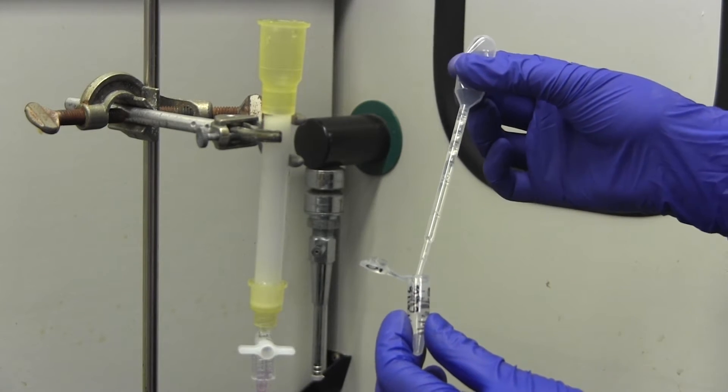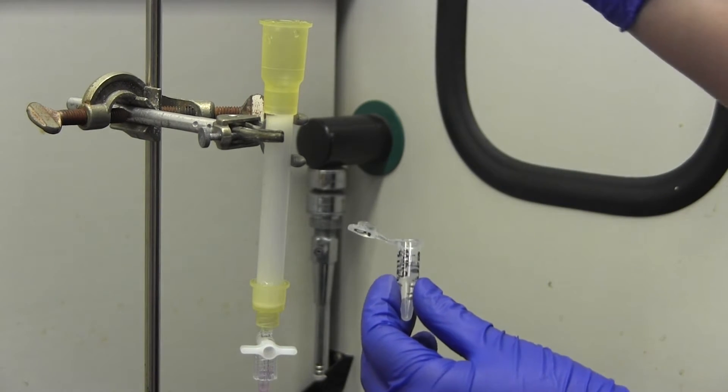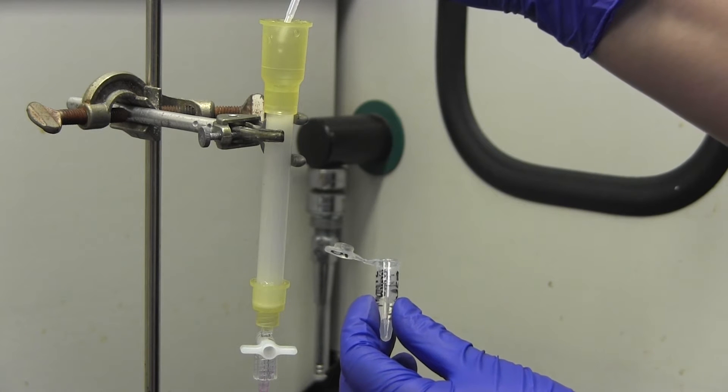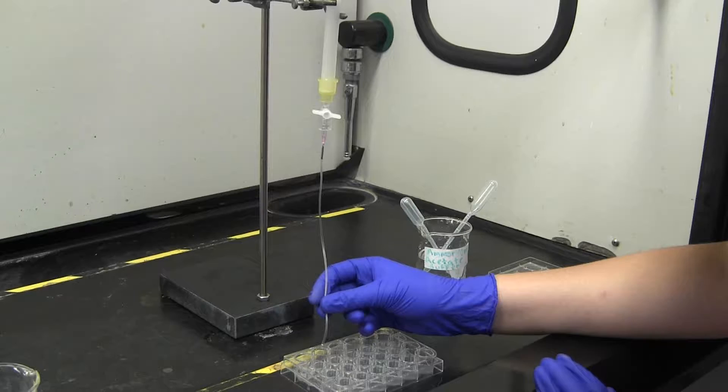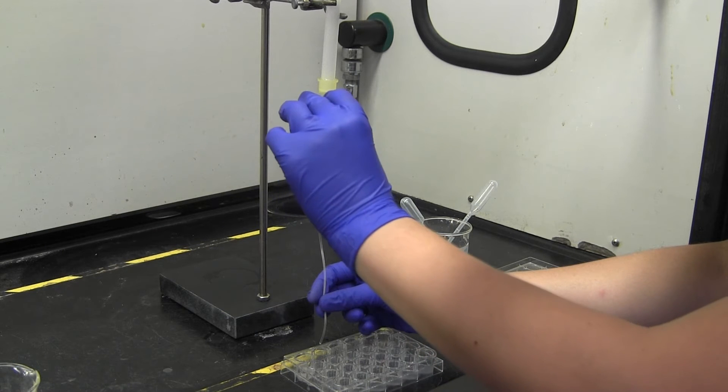Before the gel runs dry, close the stopcock and add a half milliliter of your unknown. Now you will begin to collect fractions. Make sure you catch all of the drops and keep your fractions evenly sized.